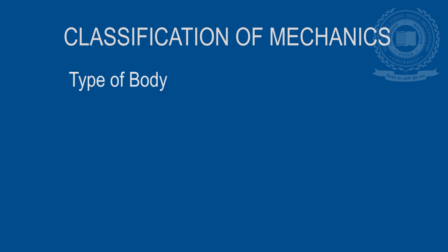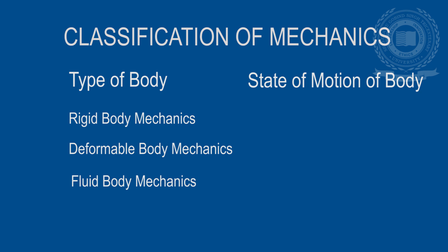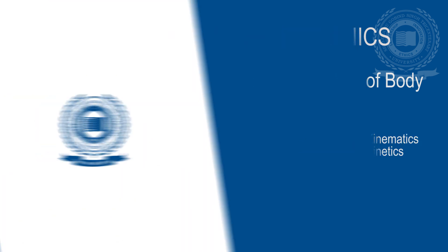Summarizing what we discussed about different fields of mechanics: on the basis of types of body, mechanics can be classified into rigid body mechanics, deformable body mechanics, and fluid mechanics. On the basis of state of motion of the body, mechanics is classified as statics and dynamics, where dynamics is further studied as kinematics and kinetics. So today we covered a basic introduction to engineering mechanics. Next time we meet, we'll be studying about some basic principles of physics that we apply in engineering mechanics. Keep learning, keep growing. See you next time.